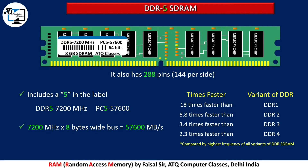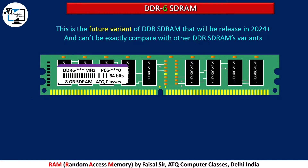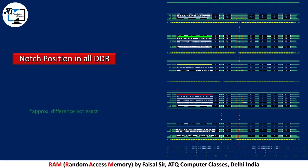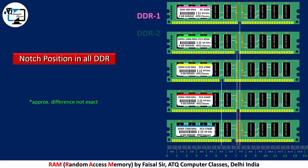DDR5 is 3.4 times faster than DDR3 and 2.3 times faster than DDR4. DDR6 is the future variant of DDR SDRAM, to be released in 2024 or later. We cannot exactly compare it with current DDR SDRAM, but it will include a 6 in the label.